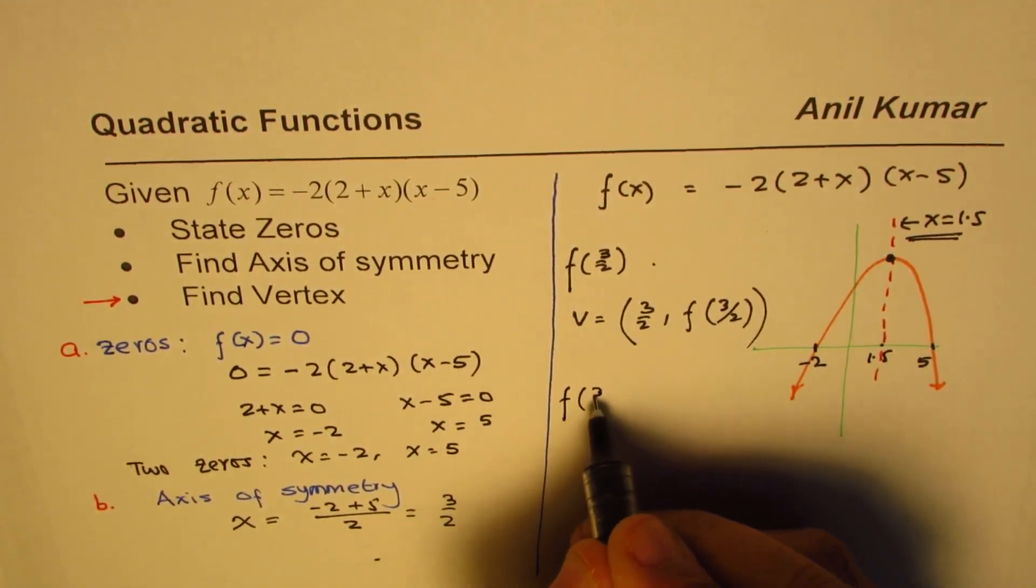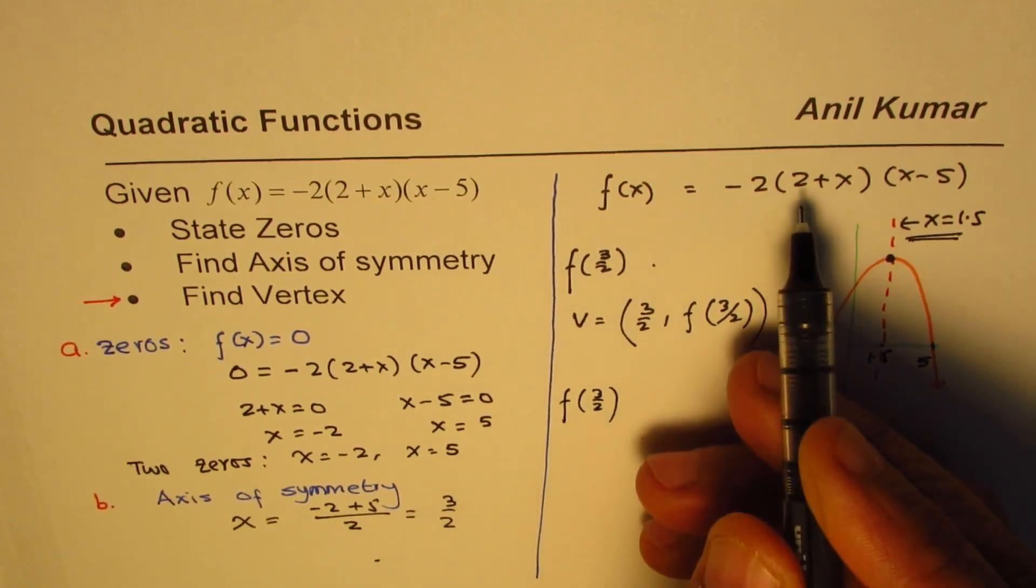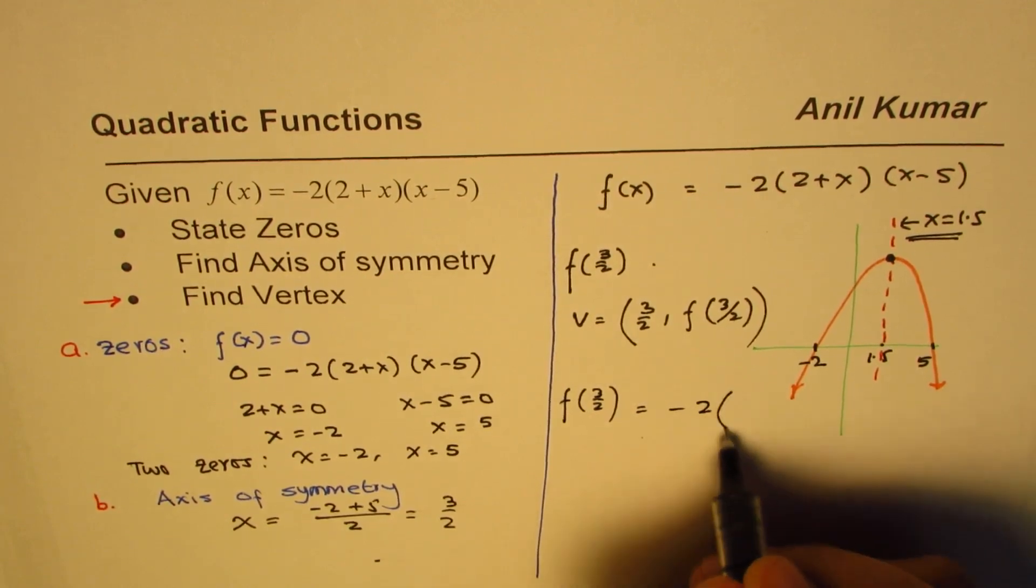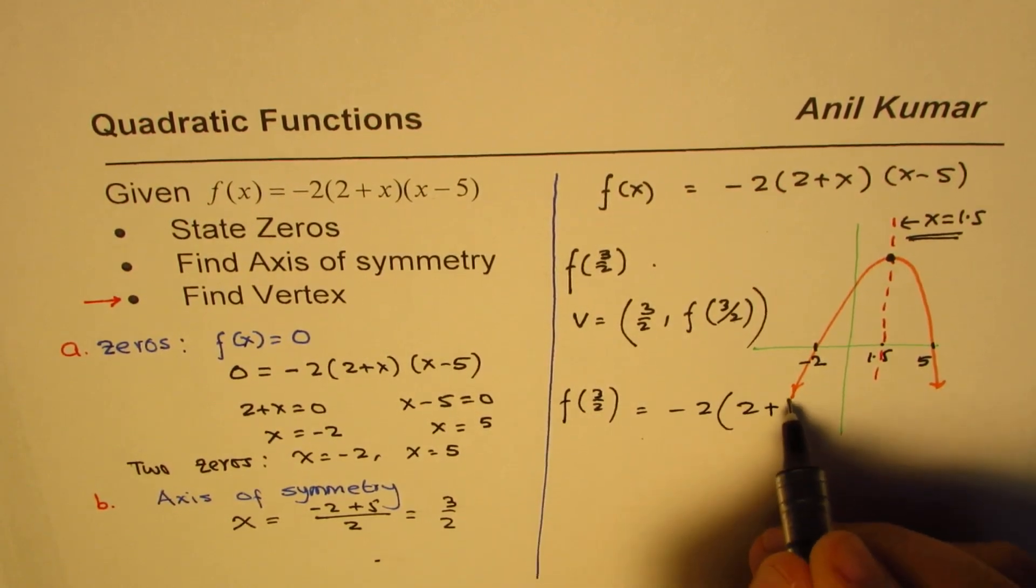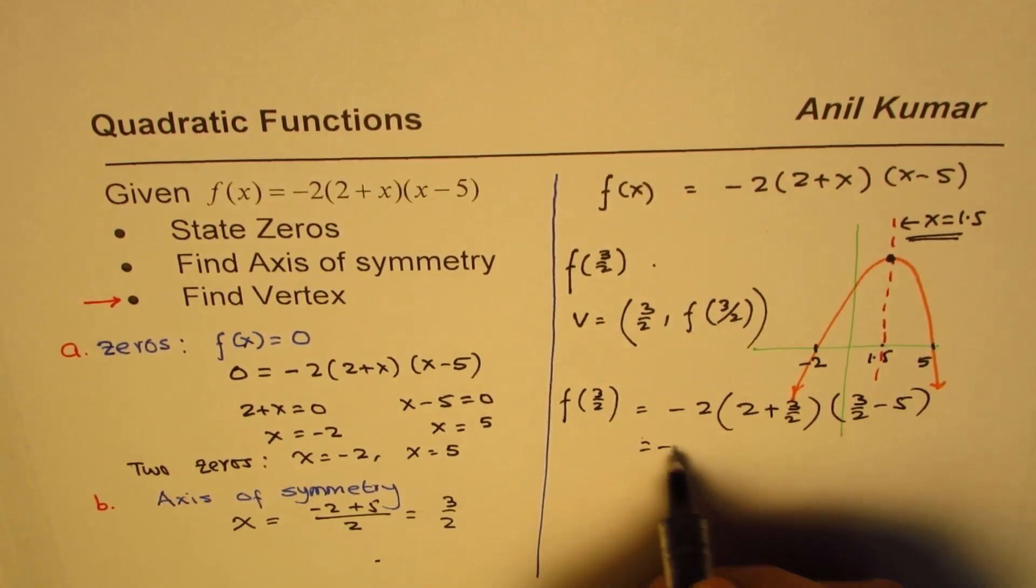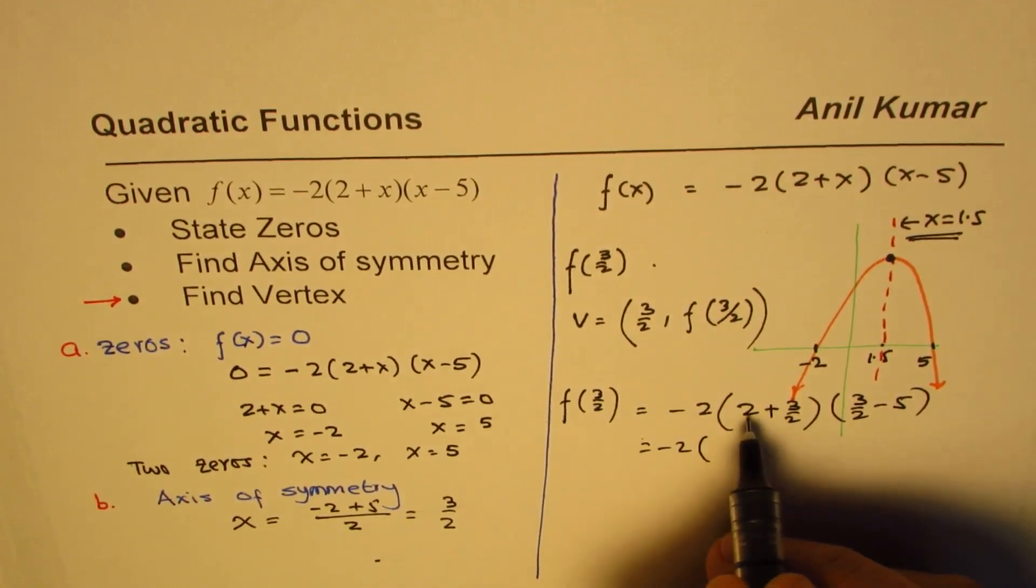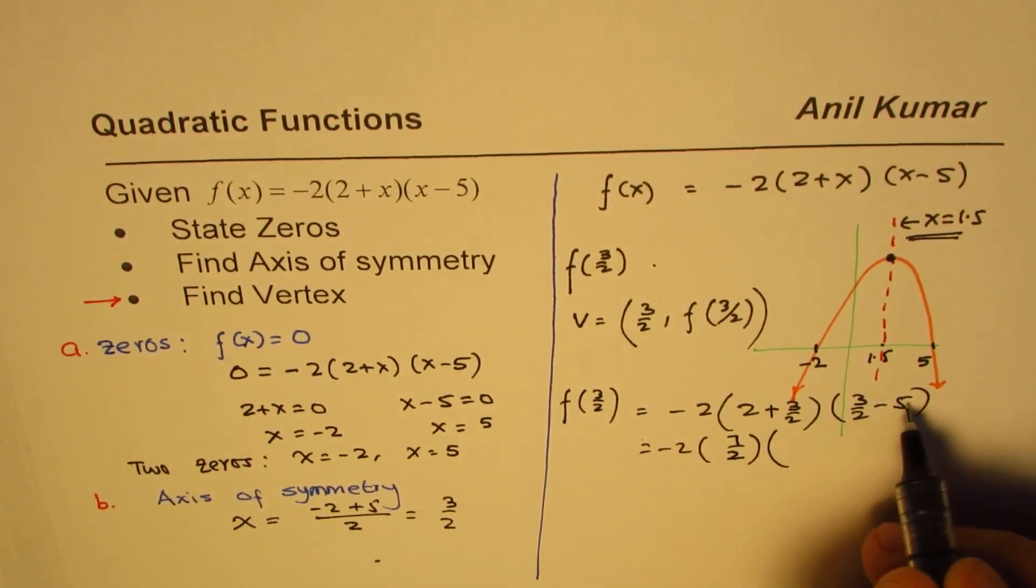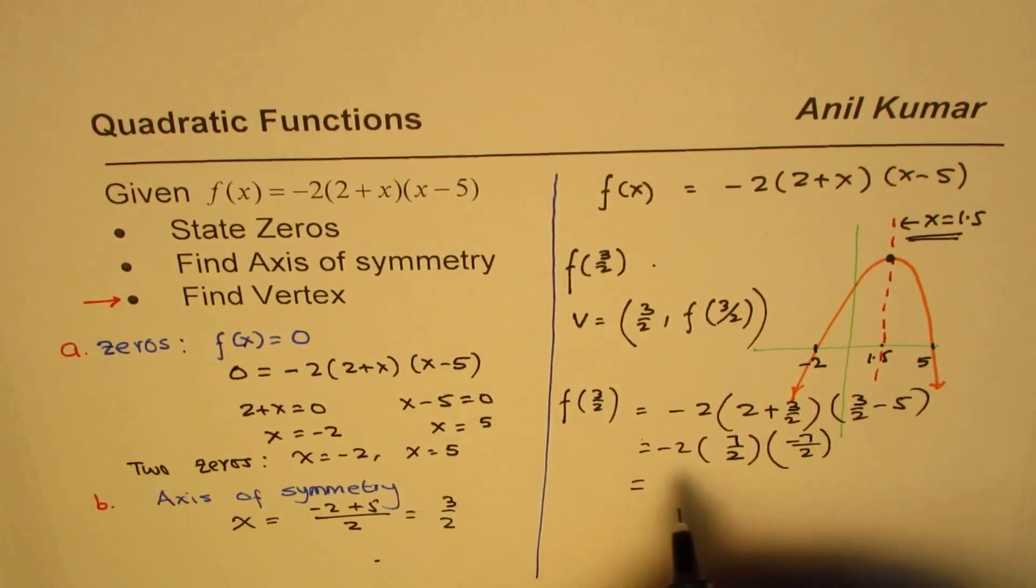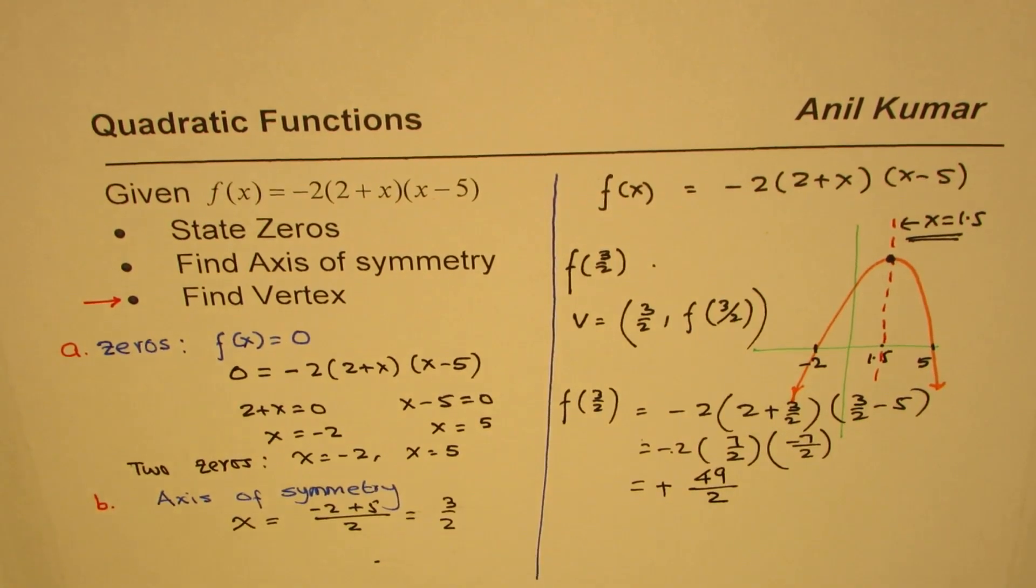Let's find the value of the vertex, which is f(3/2). You could also write 1.5 and use the calculator. So we do -2(2 + 3/2)(3/2 - 5). That gives you -2(7/2)(-7/2). When you multiply this, one of the 2's cancel, minus minus becomes plus, so we have 49/2 as the value.